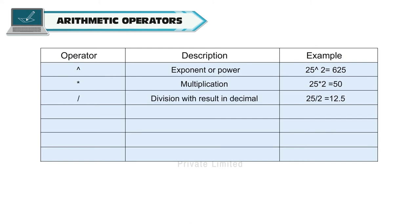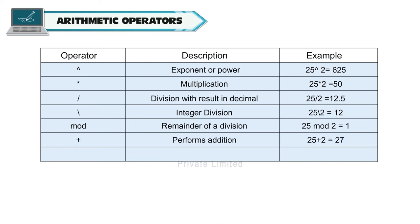Operator forward slash (/) is for division with result in decimal. For example, 25 divided by 2 is equal to 12.5. Backslash (\) is for integer division — for example, 25 \ 2 is equal to 12. Mod is used for the remainder of a division — so 25 Mod 2 is equal to 1. Plus (+) performs addition — 25 + 2 equals 27. Minus (-) performs subtraction — 25 - 2 equals 23.